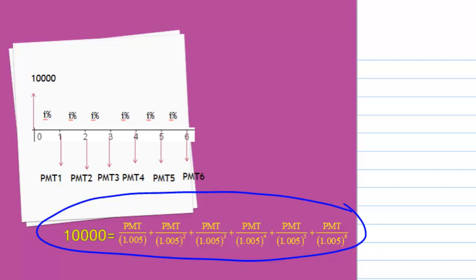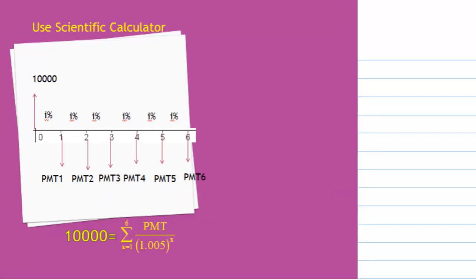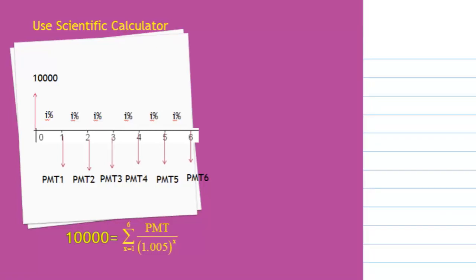We can rewrite this in summation notation. 10,000 equals the summation of PMT/(1.005)^x where x equals 1 to 6. This means PMT equals $10,000 over the summation of 1/(1.005)^x where x from 1 to 6.